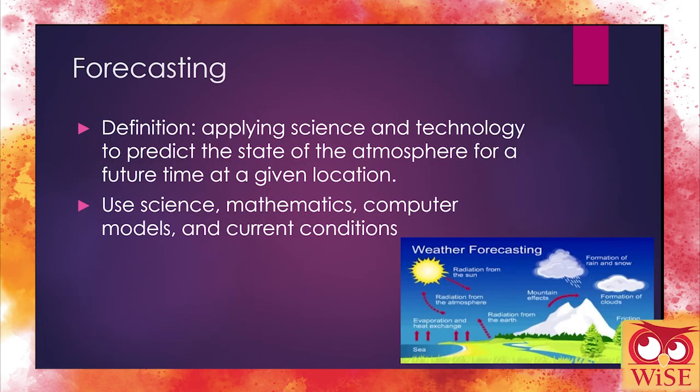Forecasting — the technical definition is applying science and technology to predict the state of the atmosphere for a future time in a given location. Which basically means we look at all the information — the science, the math, the computer models, and the current conditions — and combine that with experiences of previous events to basically take an educated guess on what we think is going to happen in the future in a specific area.